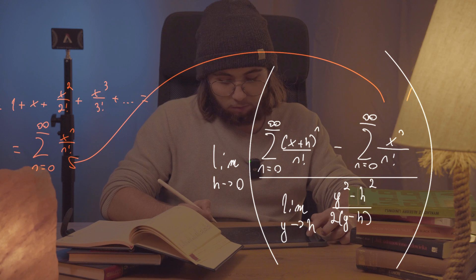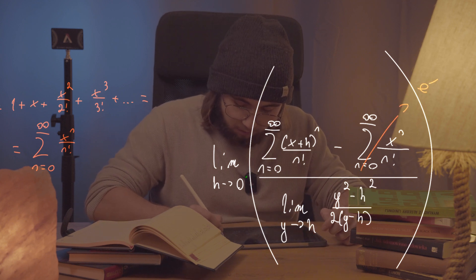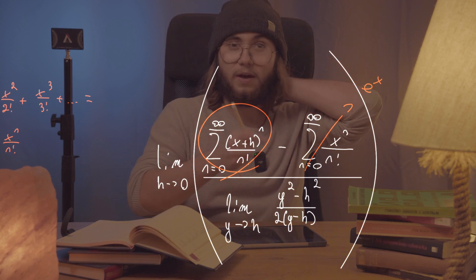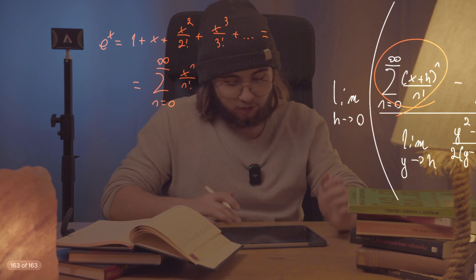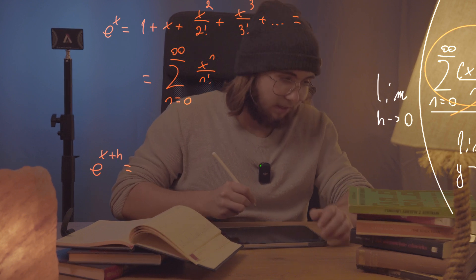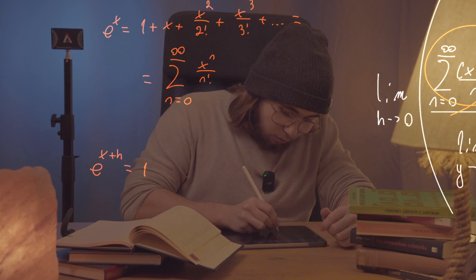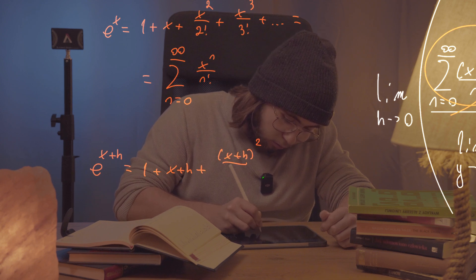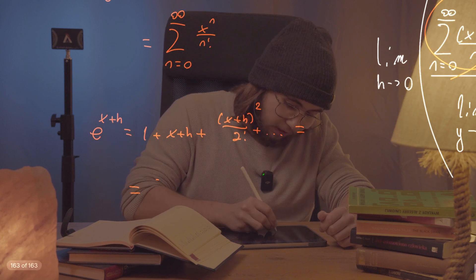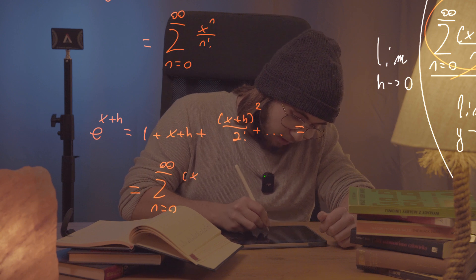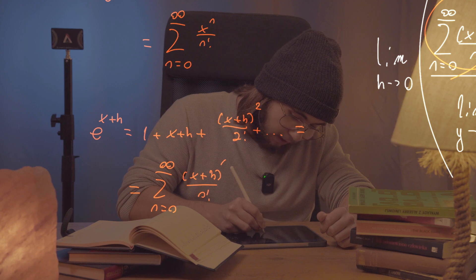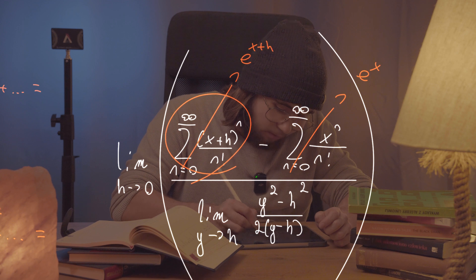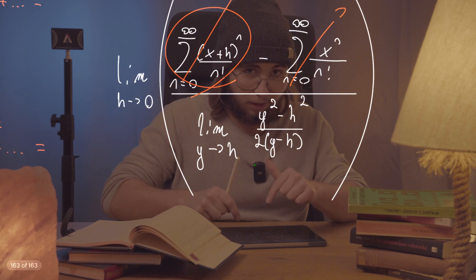We can replace the first series with e^x. The same sum but with x replaced by x+h is just the Taylor series for e^(x+h), equal to 1 + (x+h) + (x+h)²/2! + ..., which is the sum as n goes from 0 to infinity of (x+h)^n / n!. So we replace that with e^(x+h).